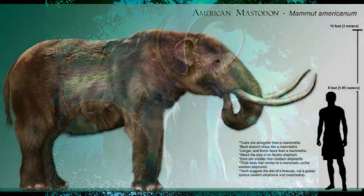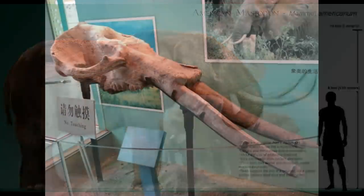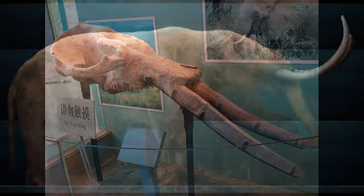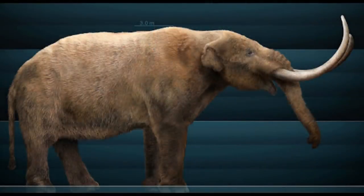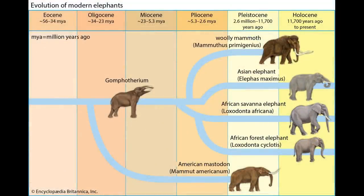Originating in Africa during the late Oligocene, the group migrated into Eurasia in the early Miocene and had spread to North America by the end of the period. Up to six genera have been described and named, although many of these are sadly known from quite fragmentary remains. These animals generally resembled modern elephants, and were members of the clade Elephantimorpha, which contained most Miocene and Plio-Pliocene proboscideans, apart from the dinotheres.